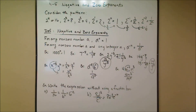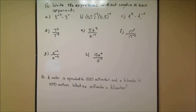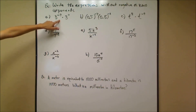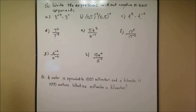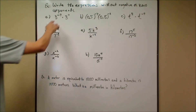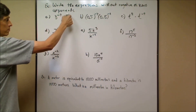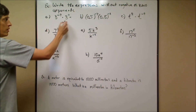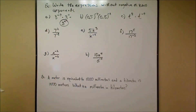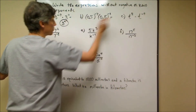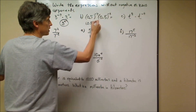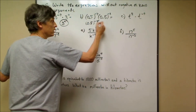Now we combine negative and zero exponents with what we learned in the last section about multiplying and dividing exponential expressions. For 3^(−7) times 3^11, the bases are the same so I use the product rule and add exponents: −7 + 11 = positive 4, giving 3^4. For 0.5^(something) where we add exponents and get a negative 15, we write it as 1 over 0.5^15.